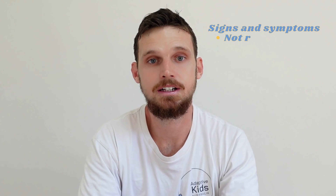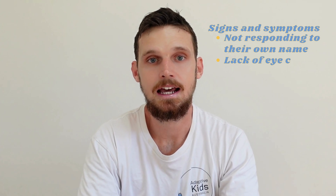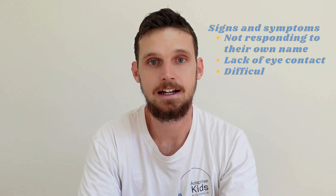Some common early signs and symptoms of autism spectrum disorder, particularly for children under three years old, include not responding to their own name, lack of eye contact, lack of sharing, fixation on play or the avoidance of play, difficulty reading emotions, understanding social cues and how to interact with adults or their peers, as well as having challenges with changes in routine and emotional regulation.